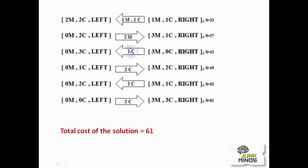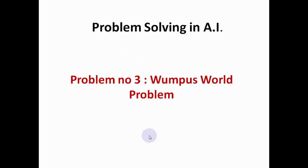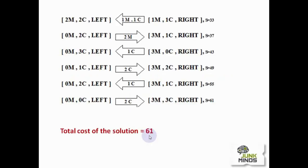Two missionaries cross, then one cannibal crosses, and finally the remaining people cross — arriving at three missionaries and three cannibals on the right hand side with a final score of 67. This is not necessarily a unique solution; different combinations of steps will yield different costs. Whether it's the water jug problem, missionaries and cannibals, or problems like Wumpus World, there is no single unique solution. That concludes chapter one. We'll take a break and continue with the next chapter. Thank you and keep learning.